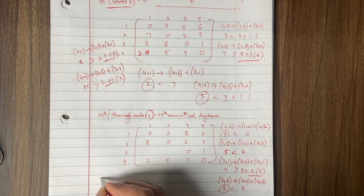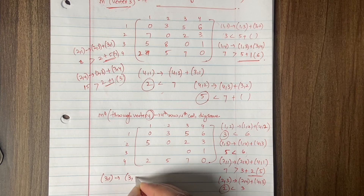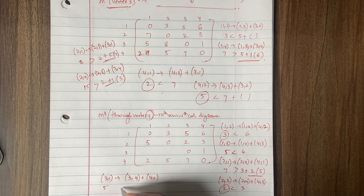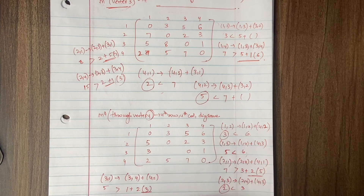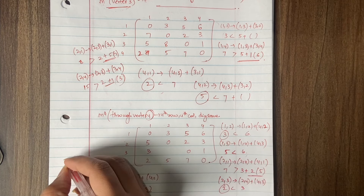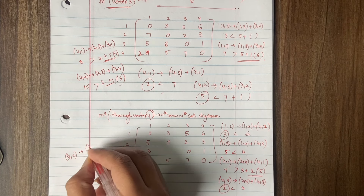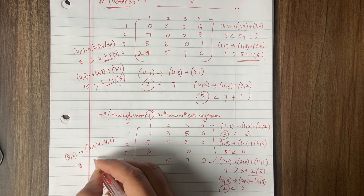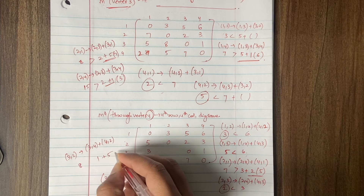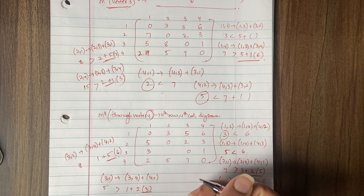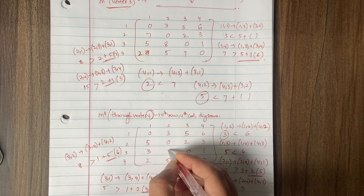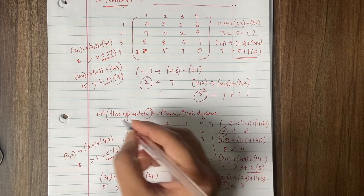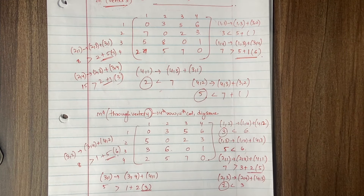For position (3,1), we write it as (3,4) plus (4,1). M3 of (3,1) is 5, and M3 of (3,4) is 1 plus M3 of (4,1) is 2, giving 3. So 3 is the lesser value — write 3. For position (3,2), we write it as (3,4) plus (4,2). M3 of (3,2) is 8, and M3 of (3,4) is 1 plus M3 of (4,2) is 5, giving 6. Among 8 and 6, the minimum is 6 — write 6.